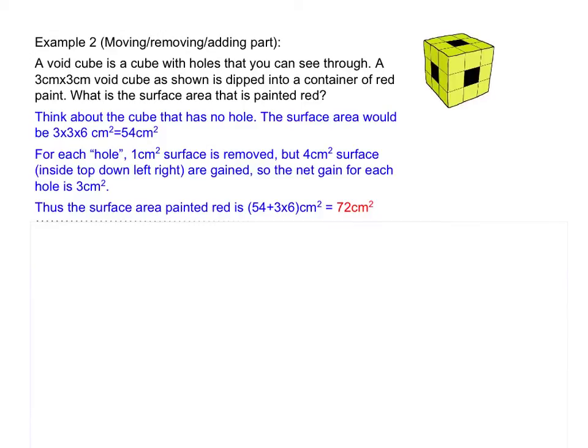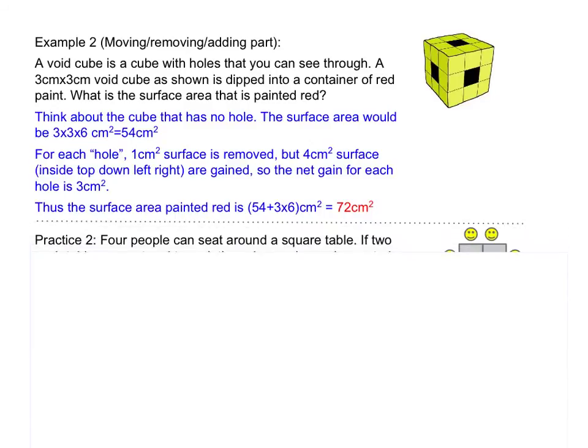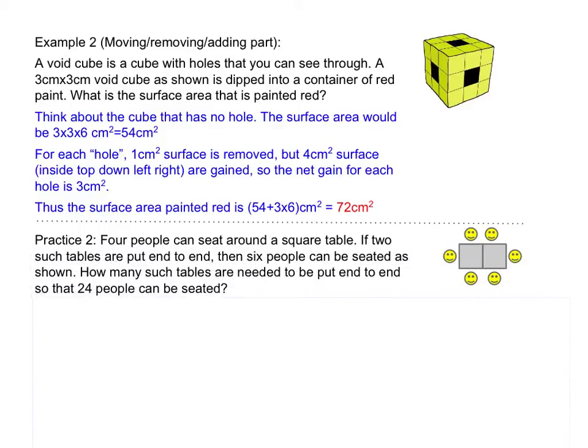So this is how we use moving, removing, or adding a part to simplify a problem. Now it's your turn to try out this practice. Four people can sit around a square table. If two such tables are put end-to-end, then six people can be seated as shown. How many such tables are needed to be put end-to-end so that 24 people can be seated? Now pause the video and think about it. Try it out yourself.